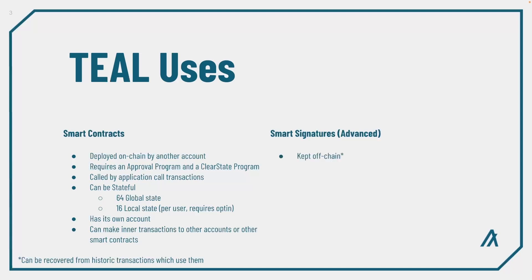Smart signatures are not stored in the ledger like smart contracts. Instead, they're a single program that's kept off-chain and are included with the transaction, just like a signature, before being sent to a node for evaluation and inclusion in a block. Smart signatures are stateless during their evaluation, meaning they cannot look up global or local state. Instead, they must look at their own transaction details or the details of other transactions within their group.